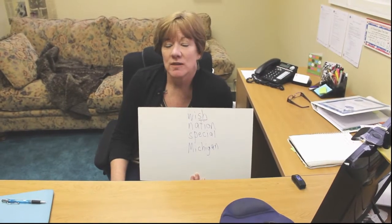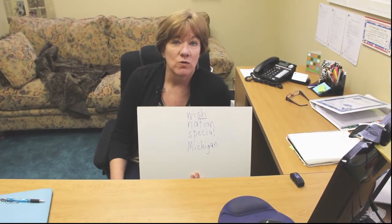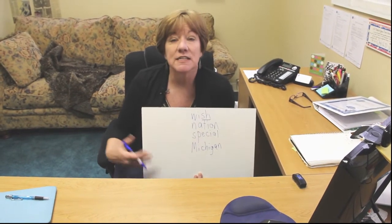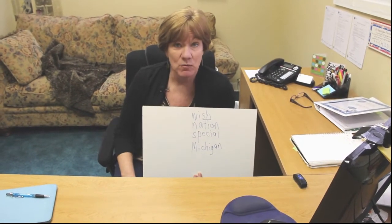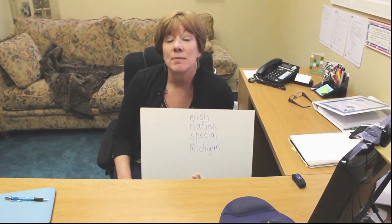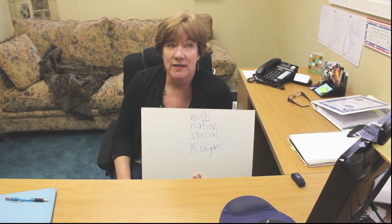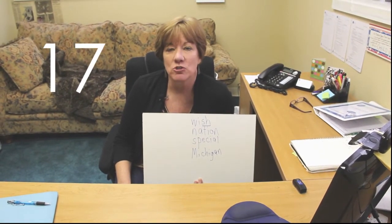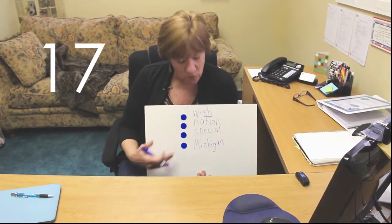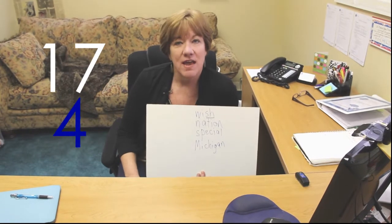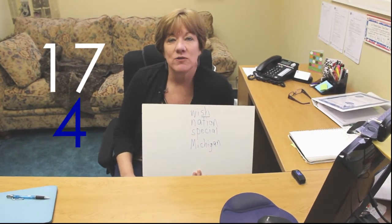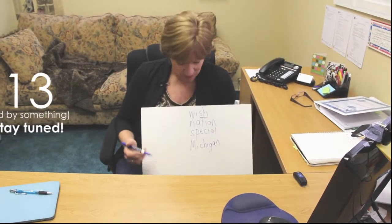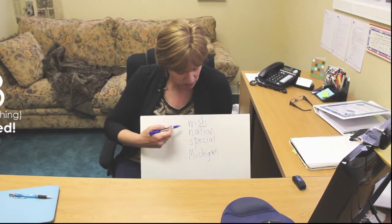All sounds in English can be spelled in more than one way. There are about 40 sounds between the vowels and the consonants, and all of them can be spelled in more than one way. But the winner is the 'sh' sound — there are 17 different ways to spell it. Today I'm going to show you four of them, and then we'll give you a few more each time in a different video.